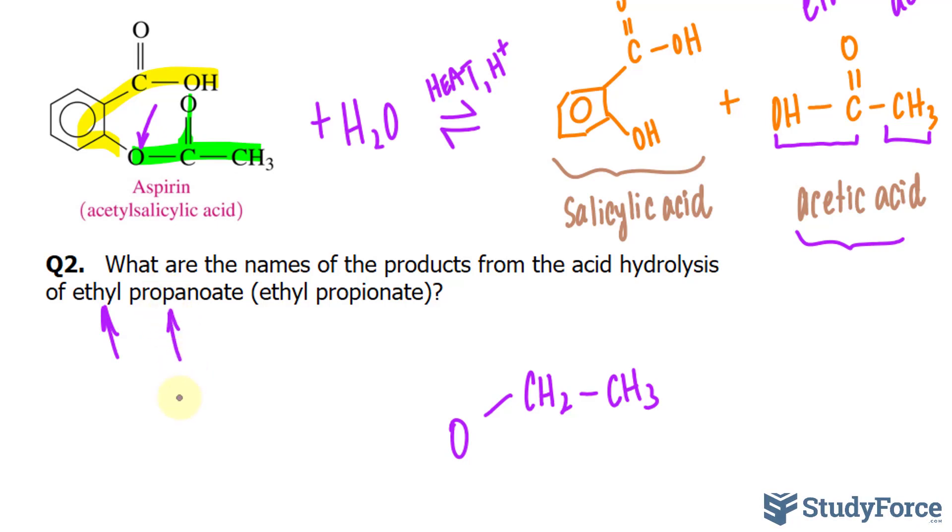Prop means that it's three carbons long. So we have this bonded to carbon, and it's a carboxylic acid, so it's double bonded to O. And the rest of the hydrogens will be filled out. So that's what ethyl propanoate looks like. It is an ester because of this ester bond.